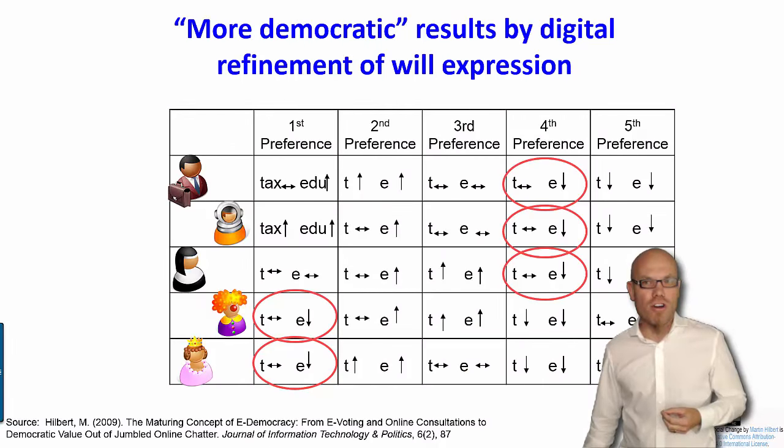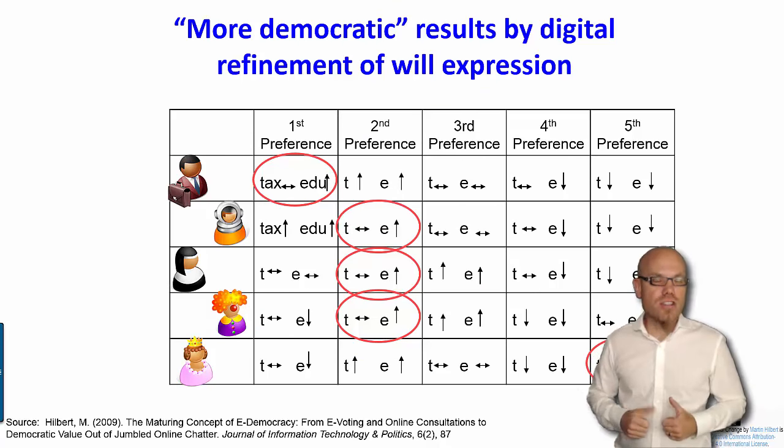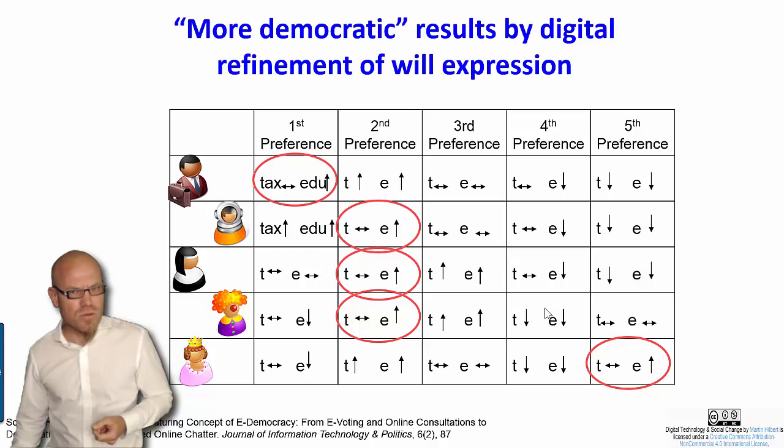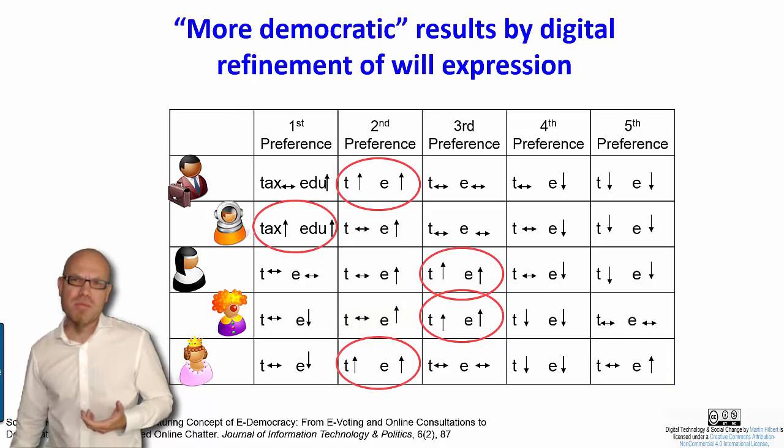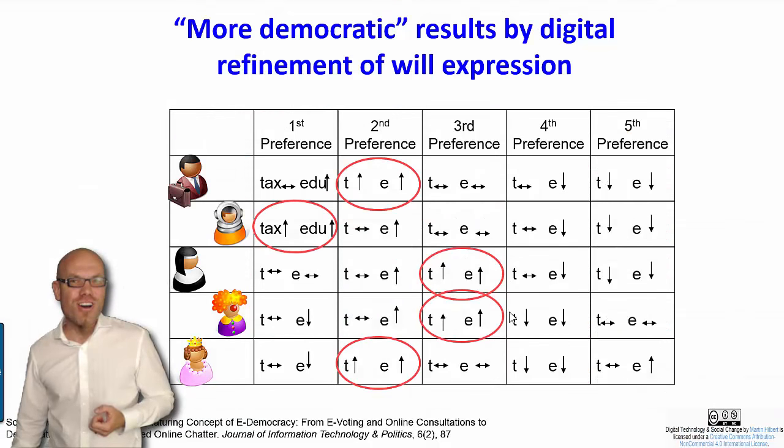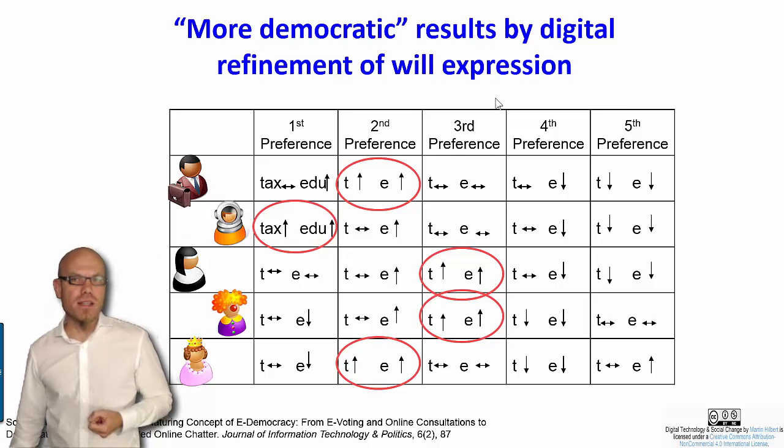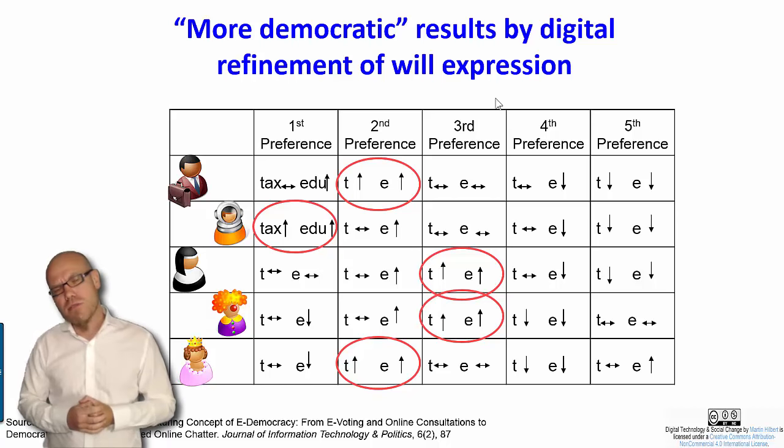For example, have a look at this option here, the option that taxes would stay equal and education spending would go up. Actually, three of our five people would prefer that, one even as his first choice. Only the princess would disagree. But this would create already a more stable compromise in our society. We can also say, if somebody really says she doesn't like it at all, we shouldn't foster that. So let's look for this option: bring the taxes up and bring education spending up. Everybody can somehow live with that. Nobody's really completely against it. And it might be an interesting compromise to go for.